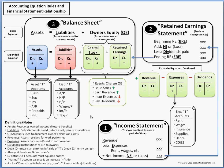The income statement shows us profitability over an accounting period. We start with revenue, subtract expenses, and that equals net income. The easiest way to remember this is R minus E equals NI. No matter how big the income statement gets or how we categorize expenses, it all comes down to R minus E equals NI.